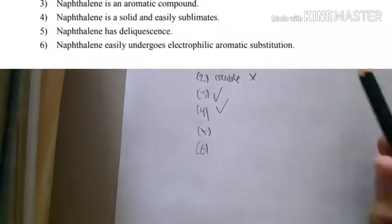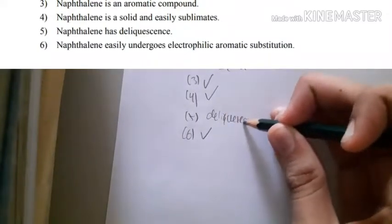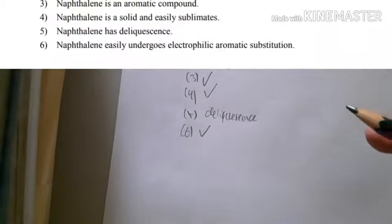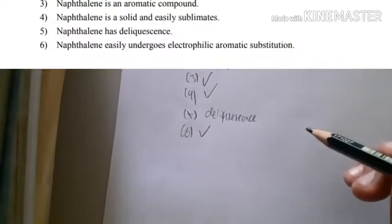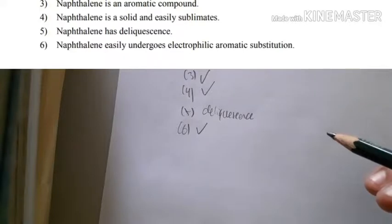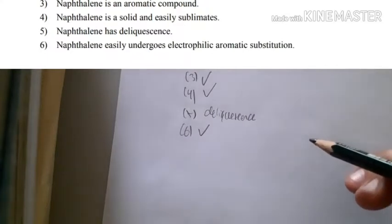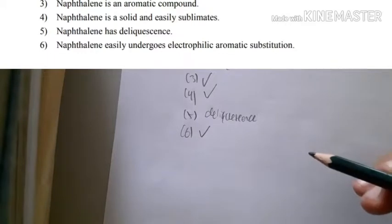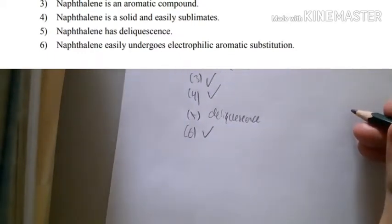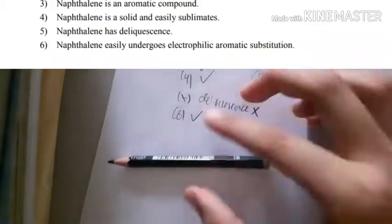Naphthalene easily sublimates — of course. Now, statement five involves deliquescence. Deliquescence is the property where a compound easily absorbs water moisture from the air, and when it absorbs too much water, the absorbed water itself dissolves the compound. Hygroscopic is a more extreme condition than deliquescence. However, because naphthalene easily sublimates, it will not have any deliquescence at all. So the answers that are not correct are two and five.